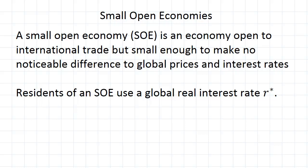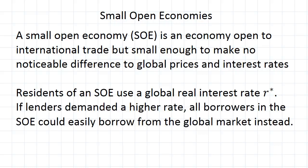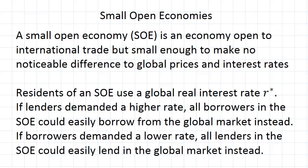Why will they all use this global rate? If lenders ask for a higher rate than what is globally available, then all the borrowers in this small open economy can simply say they're not interested in borrowing at that higher rate — they'll go to the global market where it's cheaper. And if borrowers insist on a lower rate, the lenders will just say never mind and lend in the global market instead.